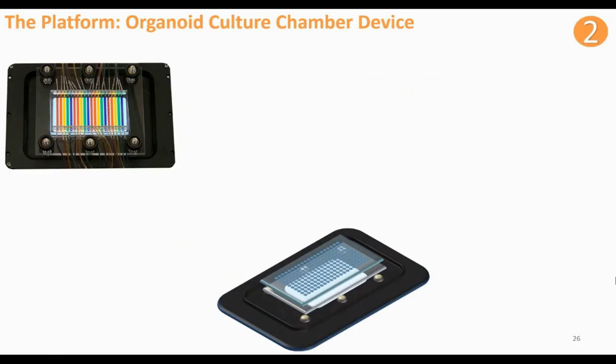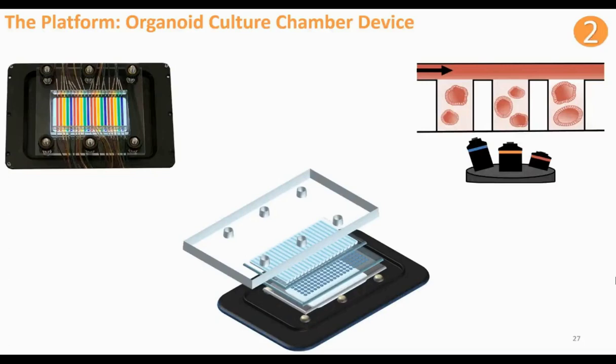Once our organoids are loaded into the chambers, a second PDMS-based channel layer rests on top of the well layer. This is reversibly bonded through a clamping-based system consisting of a clear plastic top with screws and knobs to seal the device together. Combined with the well layer, the channel layer provides fluidic channels to supply growth media during the experiment, and later on we can provide drugs or other chemical stimulants to the organoids.